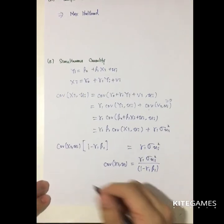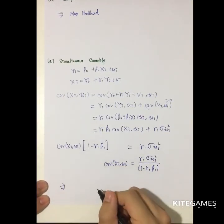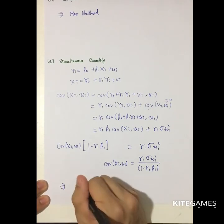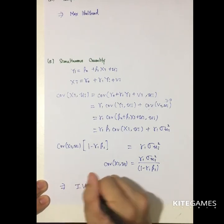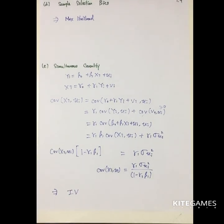This simultaneous causality again violates the assumptions. The solution is, again, to use panel data methods — in particular, instrumental variables (IV). IV stands for instrumental variables, and we will discuss the concept of panel data and IV in later videos.